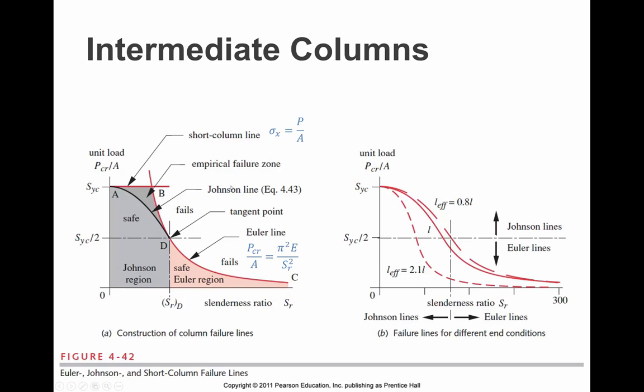But it turns out in reality there is a zone right here where we know in practice things fail before Euler's line anticipates them failing. And that's called the Johnson line, and it's been expressed as a curve fitting.